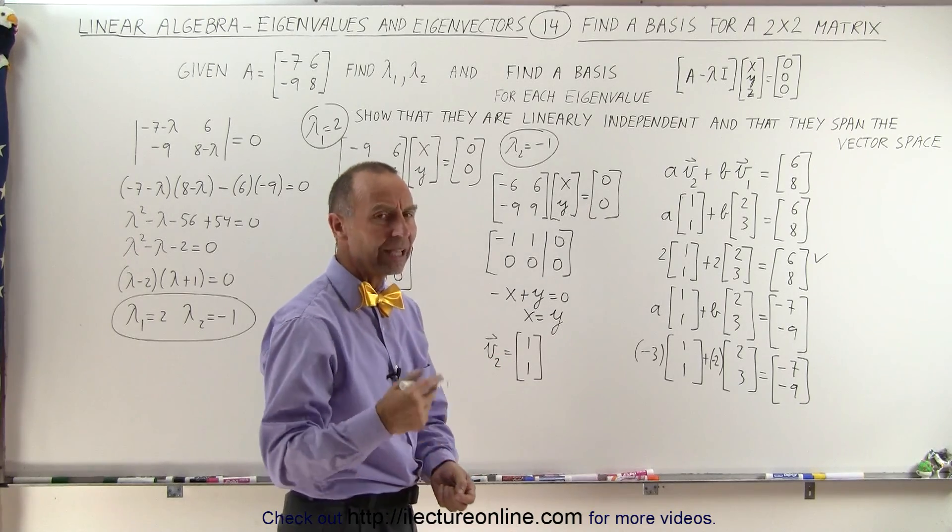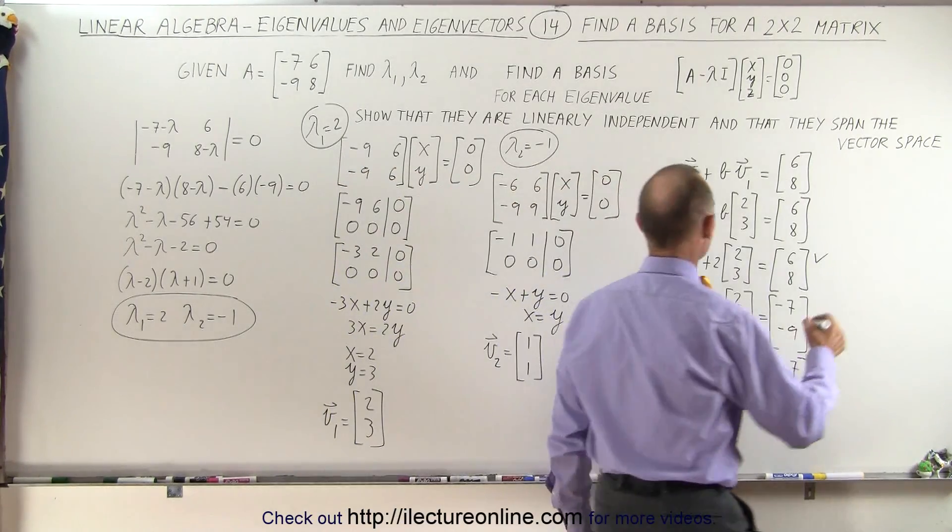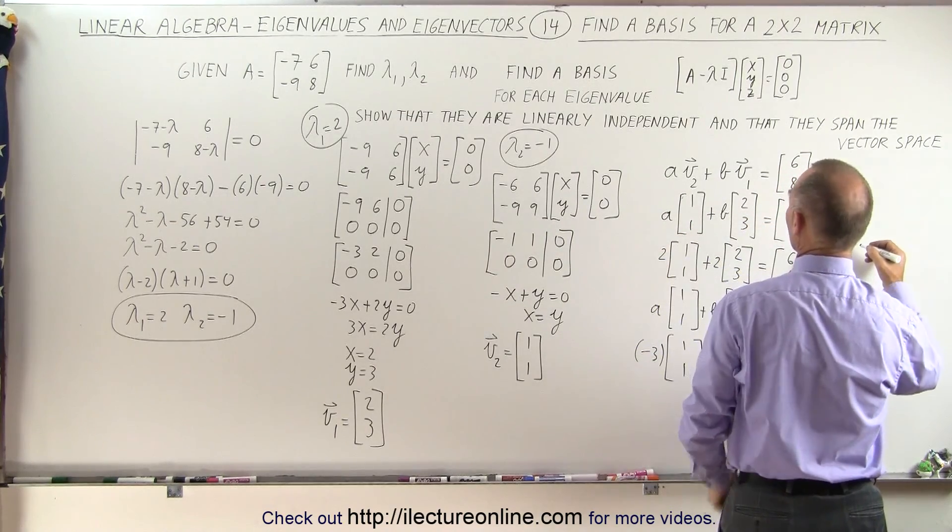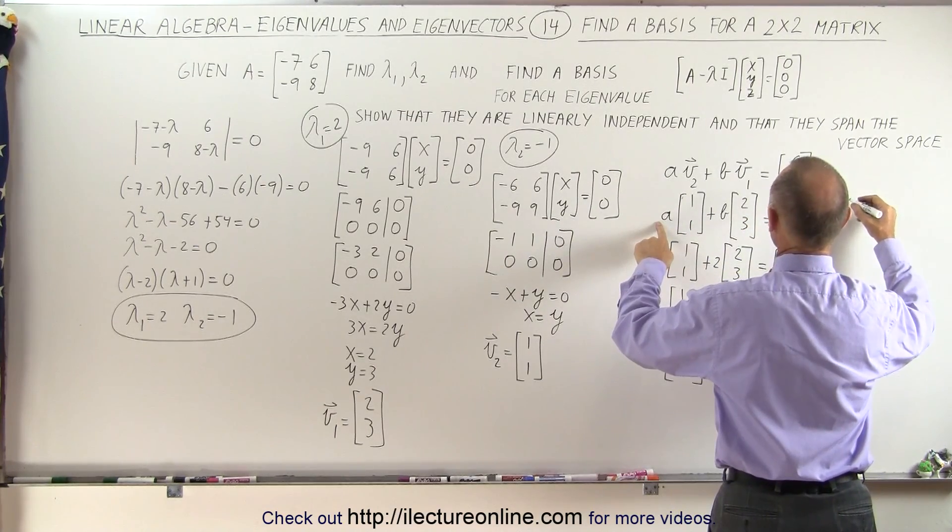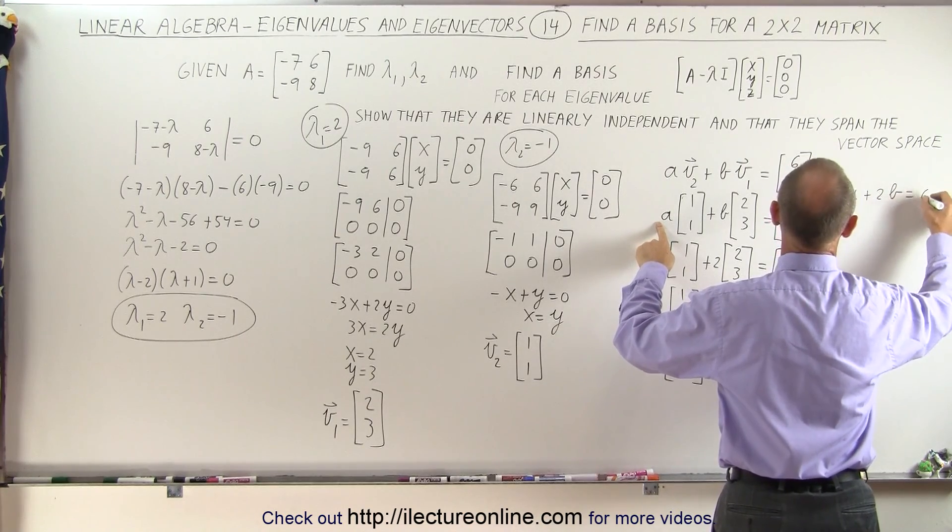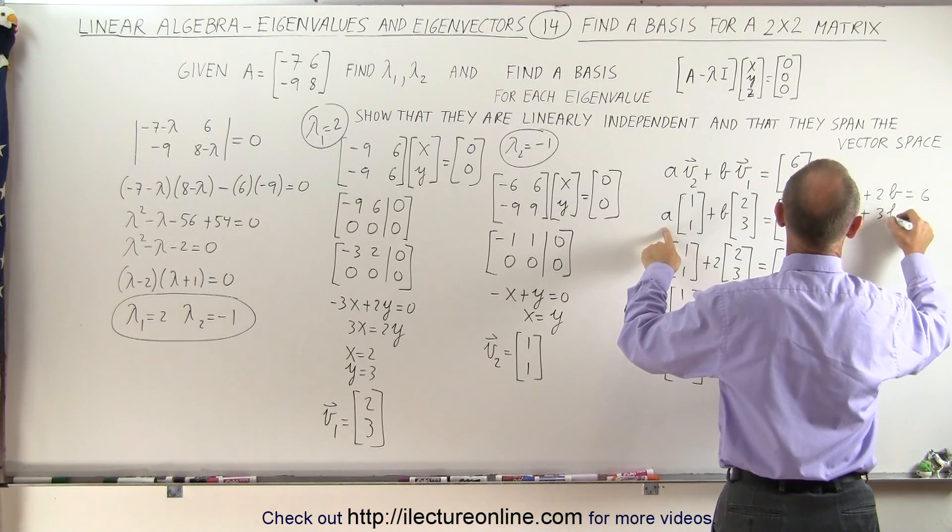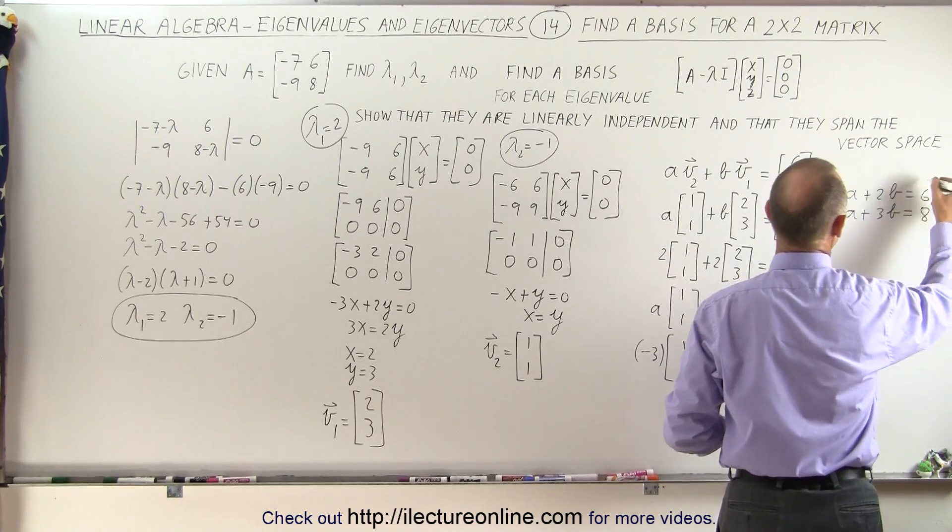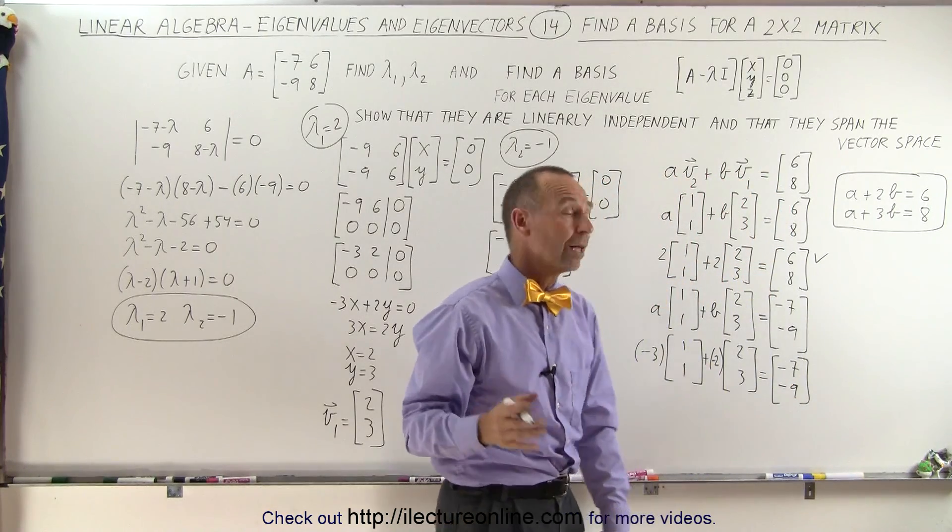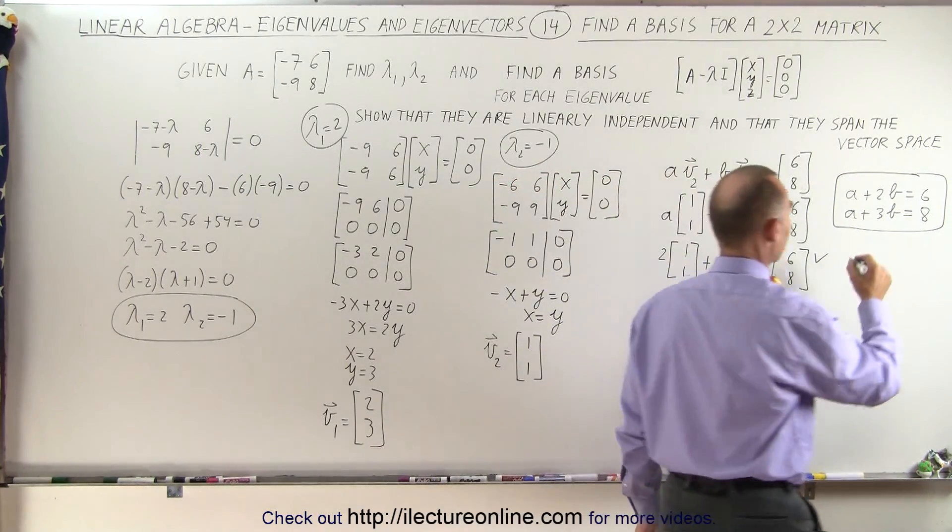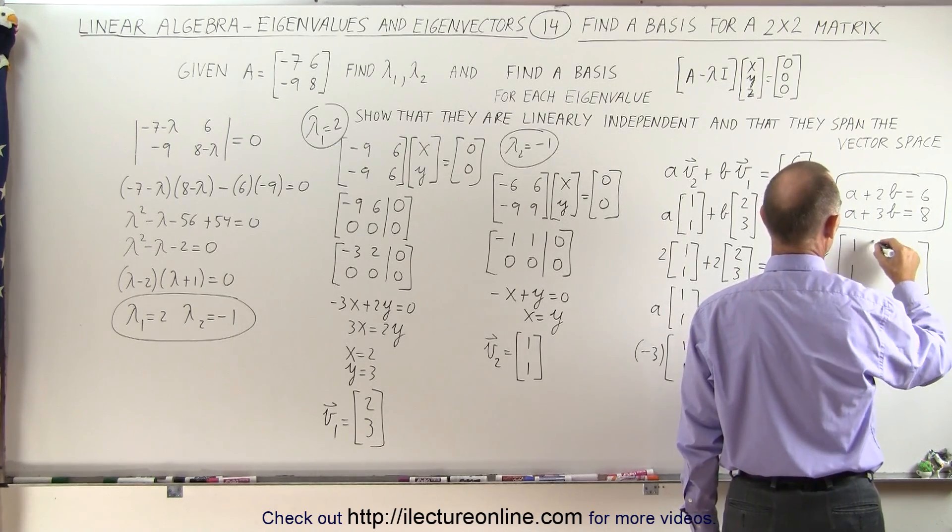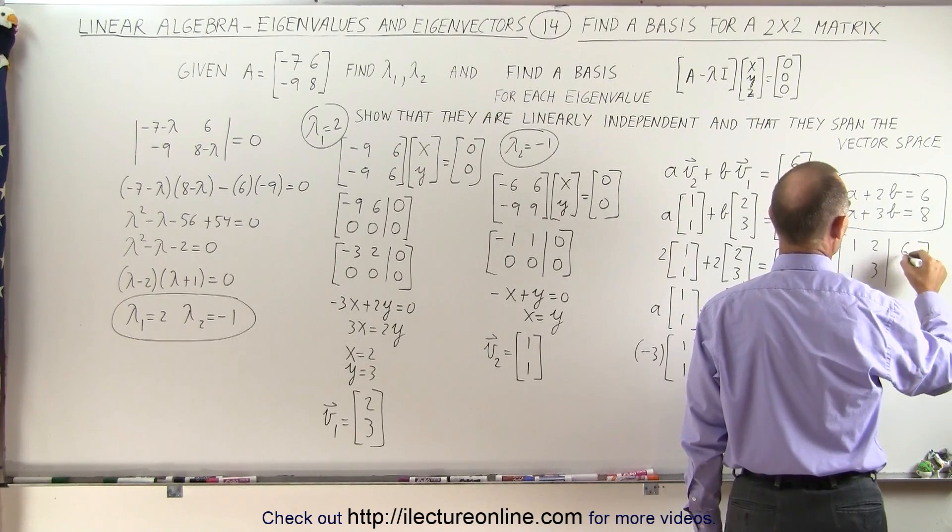You can actually use a technique to solve that. For example, you can say that you're looking for a and b to get 6 and 8. So that means that you're looking for a plus 2b to be equal to 6 and a plus 3b to be equal to 8. And you're going to solve these two equations simultaneously. You can do that by making an augmented matrix. When you do that, you get the following: you get 1, 1, 2, 3, and 6 and 8.